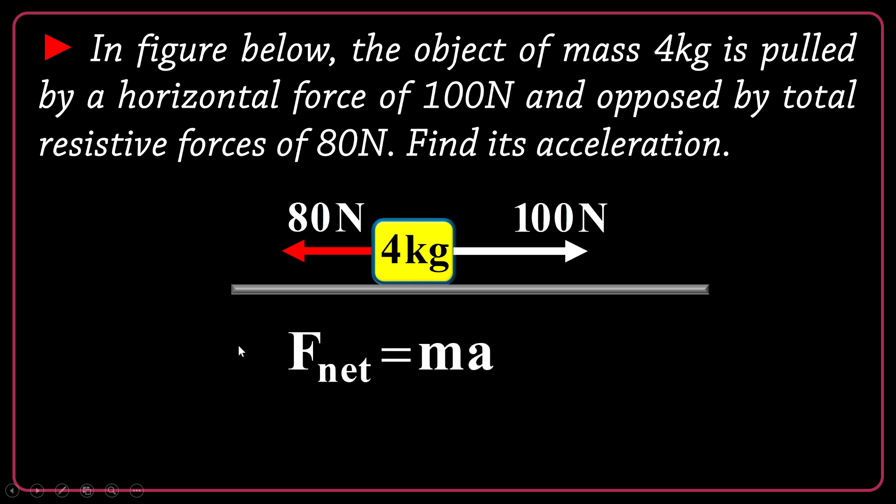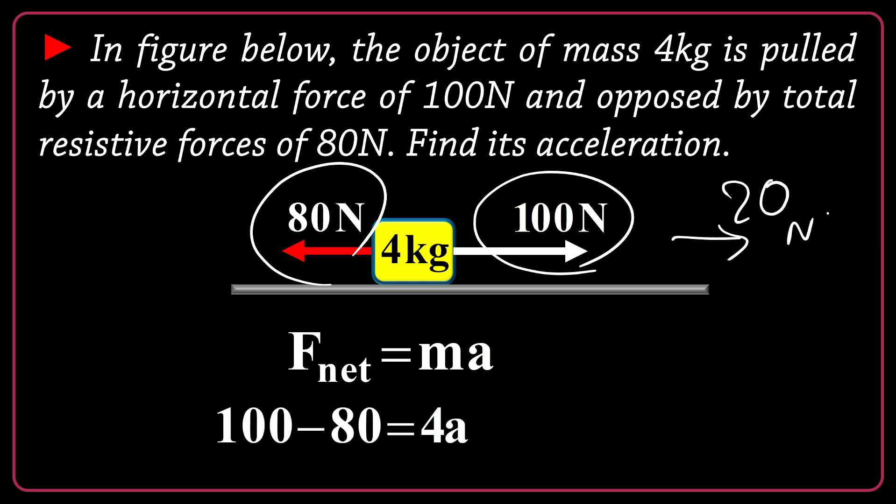To find the acceleration, I will go over Newton's second law of motion. F net equals MA. F net is 100 minus 80. You know that because they are against each other and partially canceling each other. So totally the net force would be just 20 newtons. So 100 minus 80 is equal to mass 4 times acceleration. Acceleration seems to be 20 divided by 4. So it's 5 meter per second square.